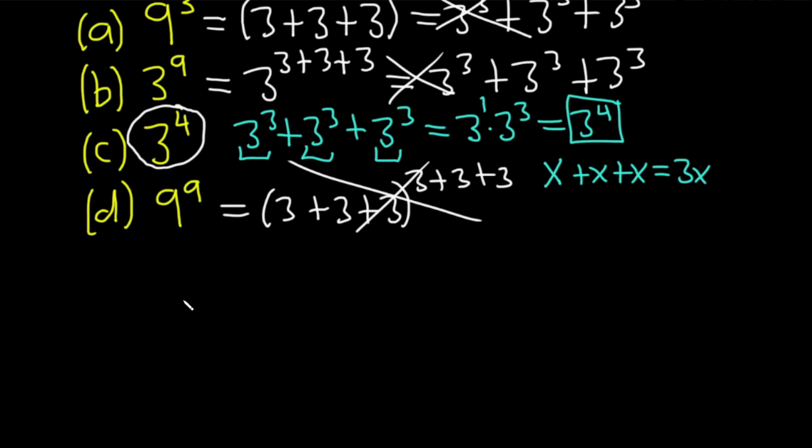So if you have 3 to the fourth, right, you can say, okay, that's equal to 3 to the 1 times 3 cubed. And again, that's from properties of exponents, because here you would add the exponent 1 plus 3 is equal to 4. This is just really 3 times 3 cubed.